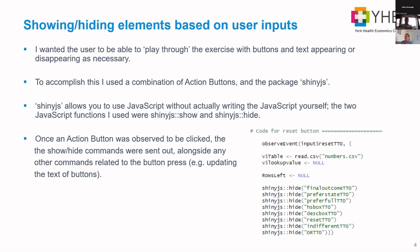Here's a quick example: once an action button is observed to be clicked, the show or hide commands fire alongside all the other commands related to that click — for example, updating numbers when buttons change. On the right we have the code for the reset button at the end of the time trade-off exercise: when it observes it's been clicked, it resets all tables to zero or the default and then hides all the main control buttons.